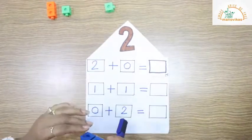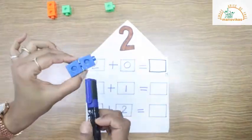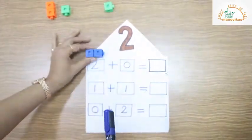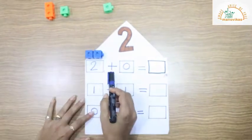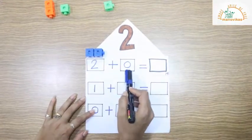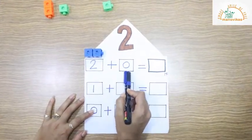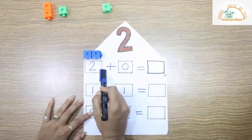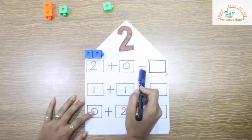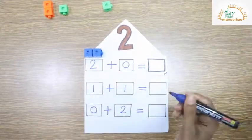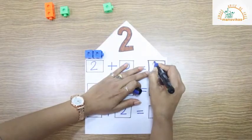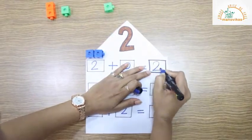There are 2 cubes: 1, 2. So 2 plus 0. As I told you, 0 has no value. So 2 plus 0 is equal to 2.